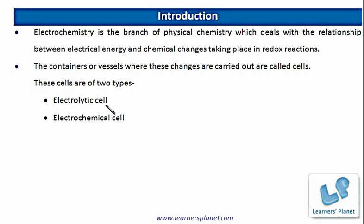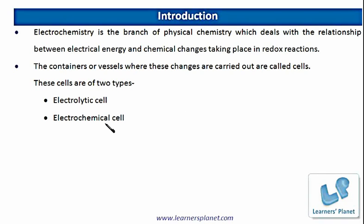In electrolytic cells, there is some electrolyte taken in the cell, and when electric current is passed into the cell, the chemical reactions take place. Whereas in electrochemical cells, the redox reactions are being carried out and they produce electric current. So these are two different types of cells.